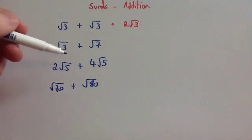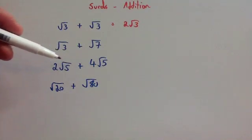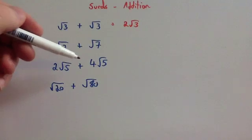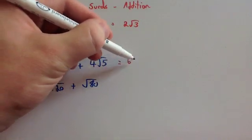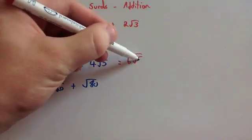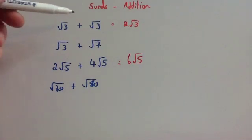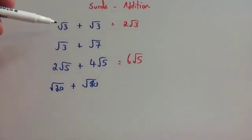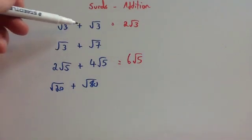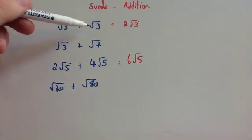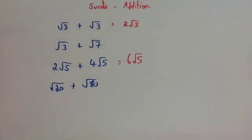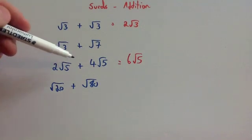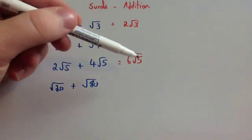If you get 2 root 5 plus 4 root 5, that's 2 lots of root 5 plus 4 lots of root 5, so altogether you're going to have 6 lots of root 5. So if you notice, we can add surds as long as they've got the same number under the square root sign. So root 3 plus root 3 is 2 root 3, and 2 root 5 plus 4 root 5 is 6 root 5.